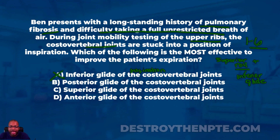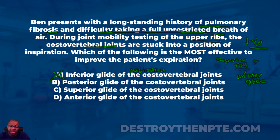Answer B is posterior glide of the costovertebral joint. If I do a posterior glide, it's not going to help with inspiration or expiration. Remember, there are only two glides that really help with this motion in the upper ribs — inferior or superior. Posterior or anterior glide is not going to help with inspiration or expiration in these upper ribs, so I'm going to eliminate B.